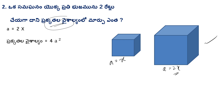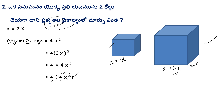The formula is 4a². Substituting a = 2x: 4 × (2x)² = 4 × 4x² = 16x². So the lateral surface area of the new cube is 4 times the lateral surface area of the original cube. If the side is increased 2 times, the LSA increases 4 times.